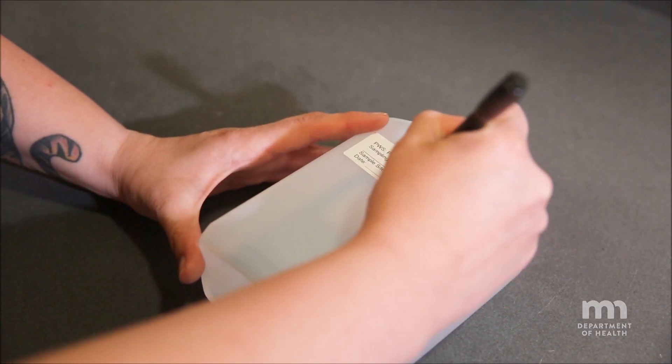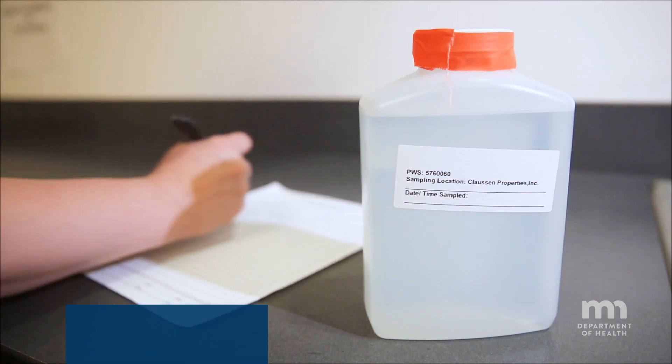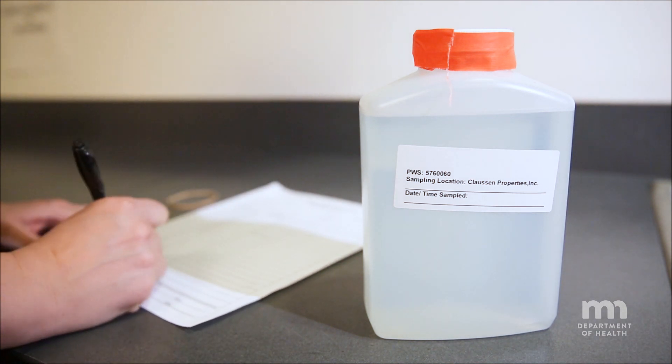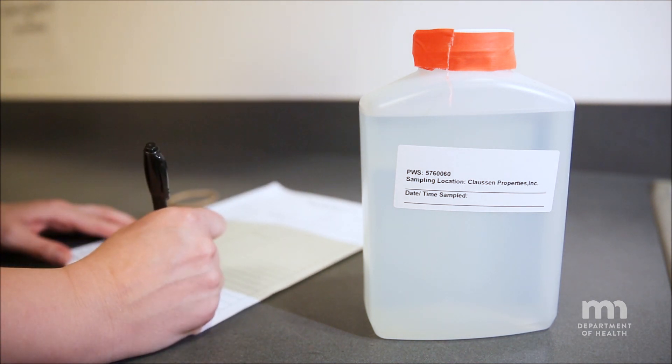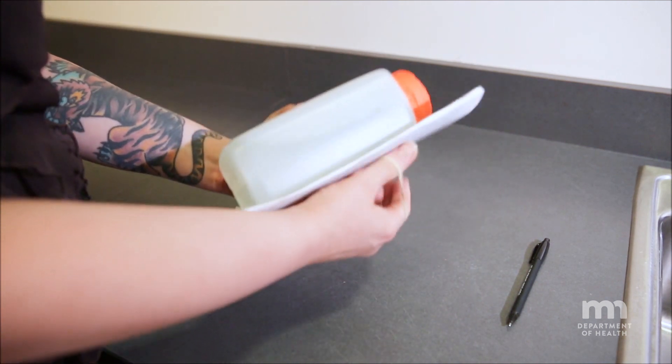Complete the label on the bottle. Complete the tap water sample form. Your utility cannot accept samples without a completed tap water form. Let your utility know if you need help to answer those questions. Attach the form to the bottle using tape or a rubber band.